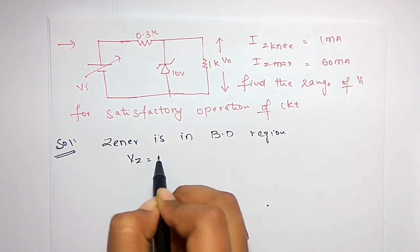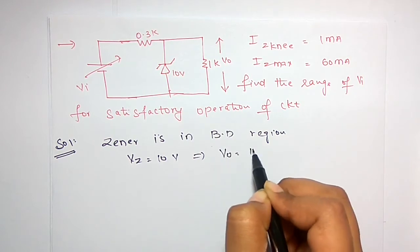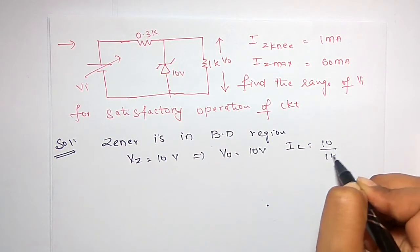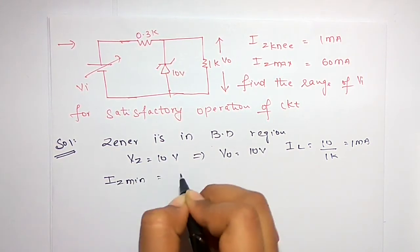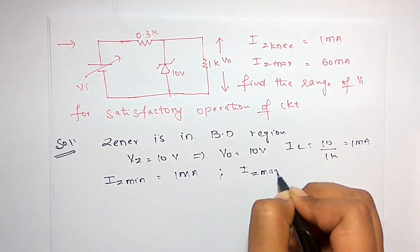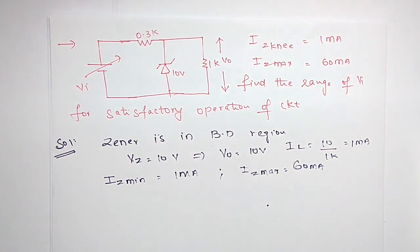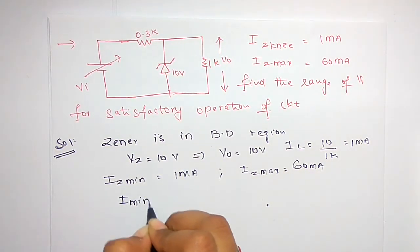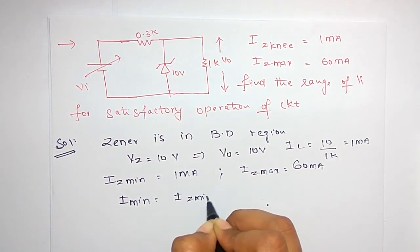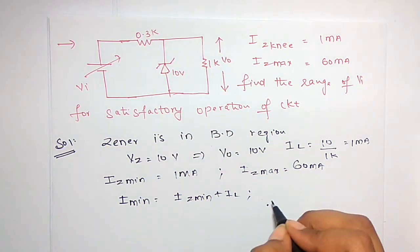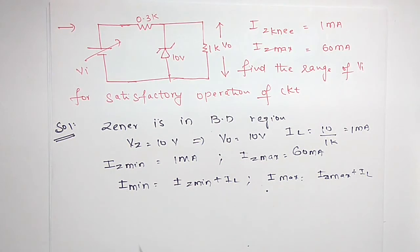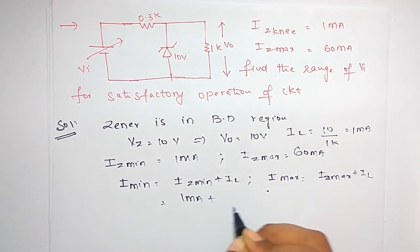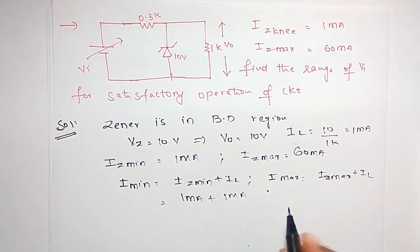As Vz equals 10 volts, output voltage equals 10 volts. Therefore, load current IL equals 10 divided by 1 kilo ohm, which is 1 milliamp. IZ minimum is 10 milliamps and IZ maximum is 60 milliamps. I minimum equals IZ minimum plus IL, which is 10 plus 1 equals 11 milliamps. I maximum equals IZ maximum plus IL, which is 60 plus 1 equals 61 milliamps — sorry, IZ minimum is 10 milliamps, so total minimum is 11 milliamps.